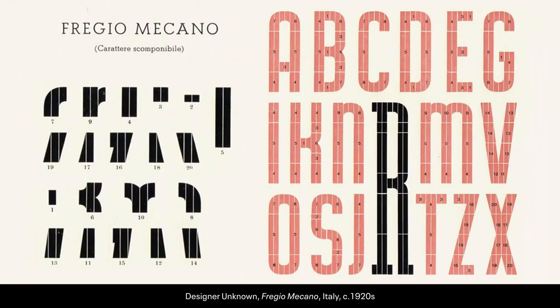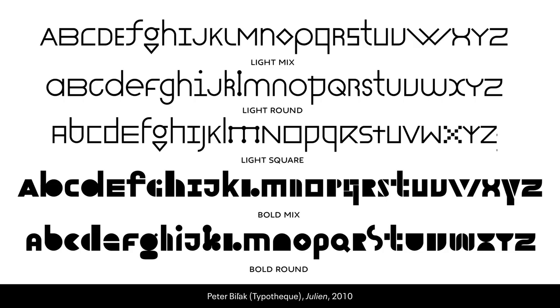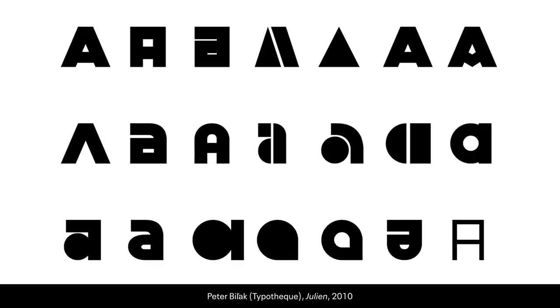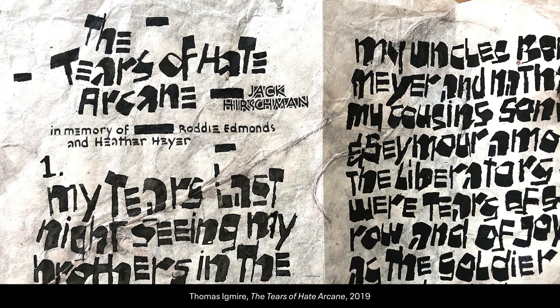Here is Fregio Meccano, made in Italy, where these little parts on the left-hand side were all you needed to create your own DIY typeface. You could stretch it as much as you want. You can see little numbers — it's like a little build-your-own-adventure Lego system. As technology progresses, people are creating new ways to make this modularity come alive. The Julian typeface by Peter Bullock was created where everything was based on round squares, and with OpenType features, there were all these different glyphs getting swapped out as you were typing — contextual alternates, for people who know the OpenType lingo.